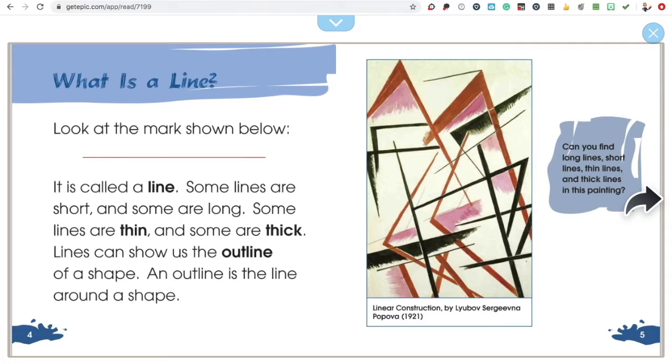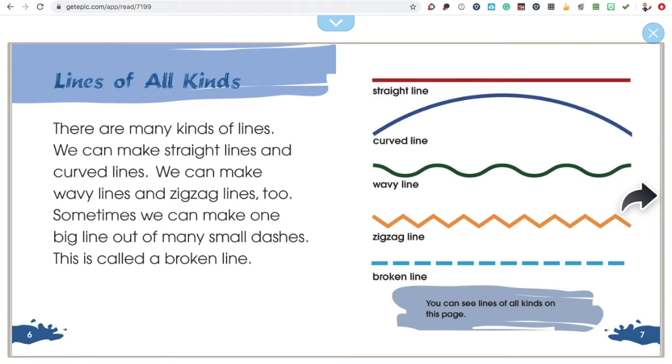An outline is the line around a shape. There are many kinds of lines. We can make straight lines and curved lines. We can make wavy lines and zigzag lines too. Sometimes we can make one big line out of many small dashes. This is called a broken line.